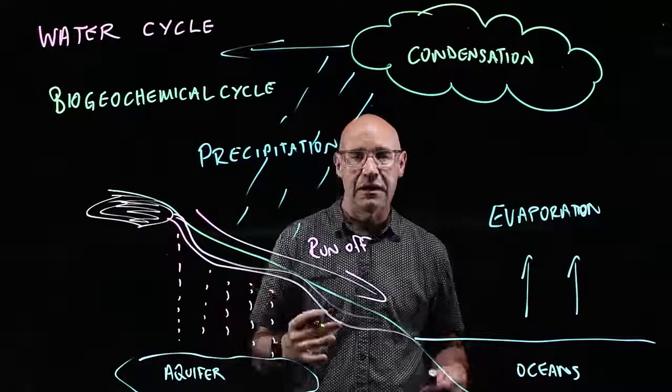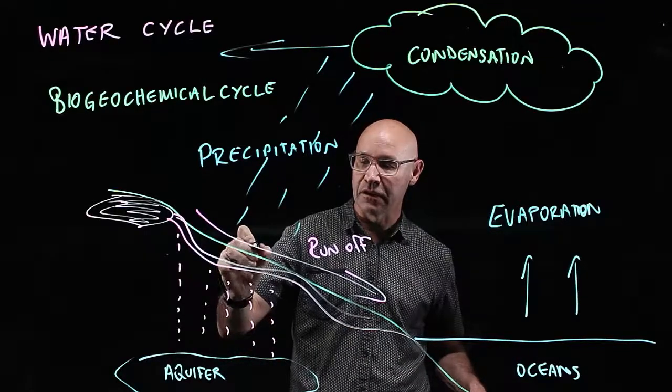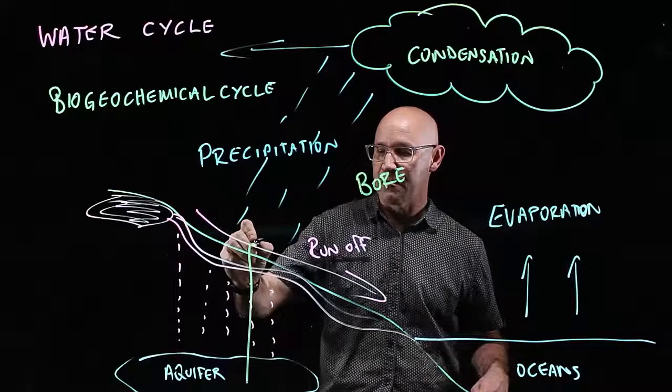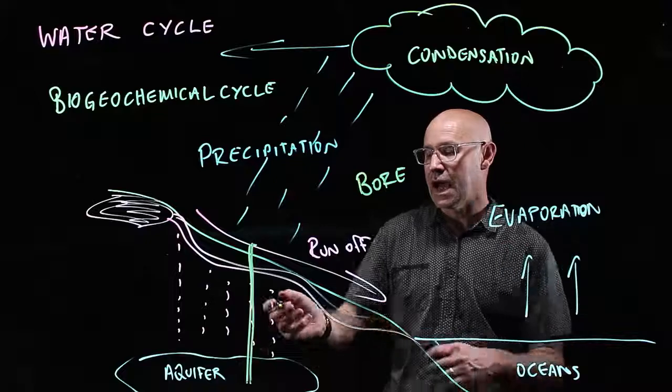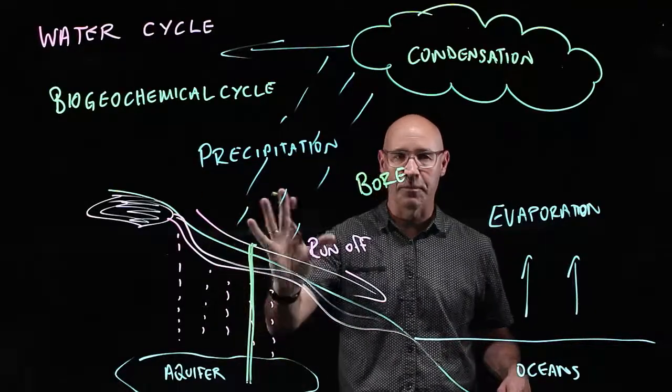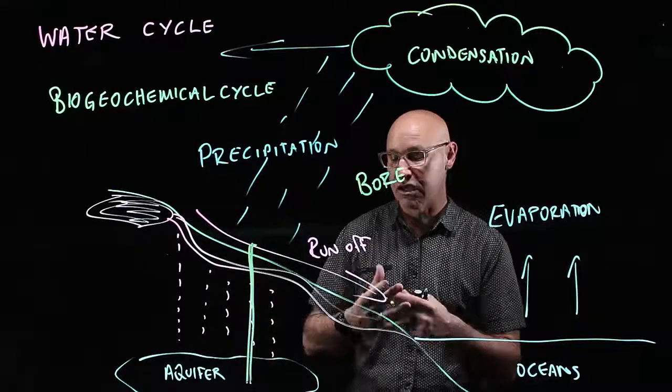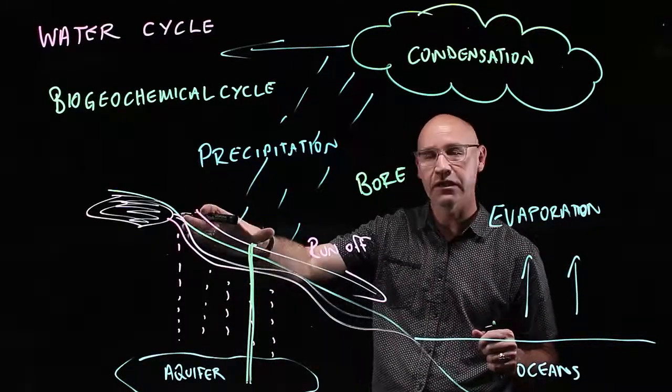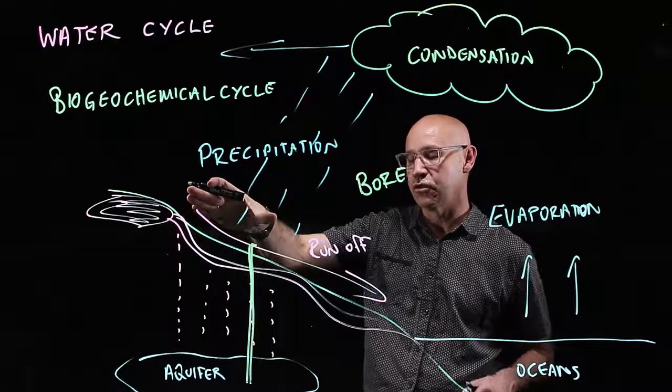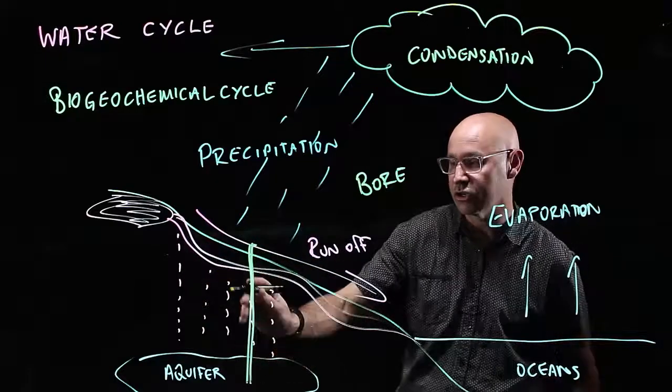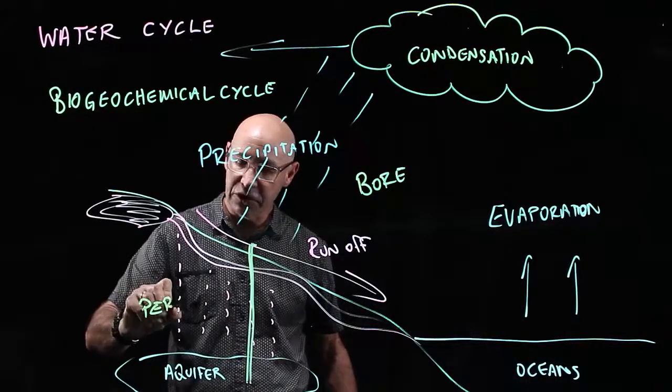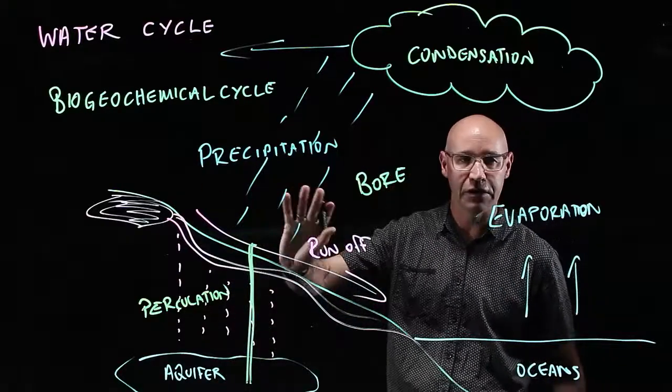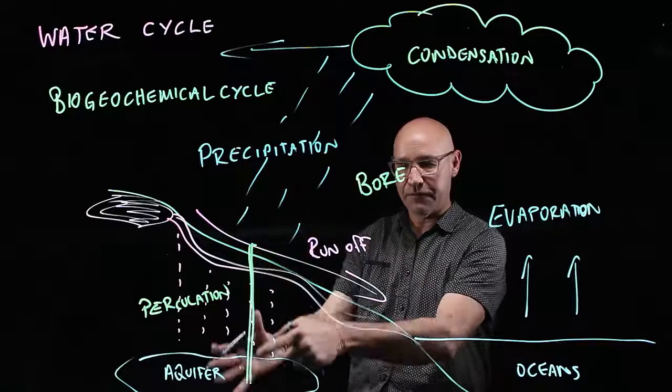But a really important one I want to talk to you about is the fact that the water that's in these aquifers is drained or accessed by farmers through bores. A bore is a big, long pipe that goes down into the aquifer and the water is pumped out and is sprayed onto crops to help the yield of the produce that the farmer is growing. Now, the trouble is, it takes thousands of years for the water to percolate. This is called percolation. And it takes thousands of years for the water to percolate down into these aquifers.